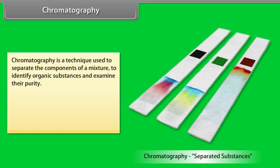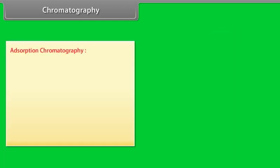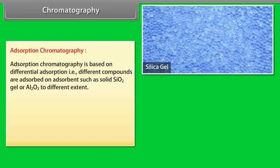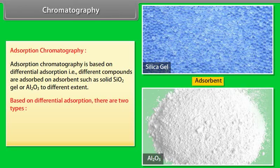Chromatography: Chromatography is a technique used to separate the components of a mixture, to identify organic substances, and examine their purity. Classification of chromatography: adsorption chromatography and partition chromatography. Adsorption chromatography is based on differential absorption — different compounds are absorbed on an absorbent such as solid SiO₂ gel or Al₂O₃ to different extents.